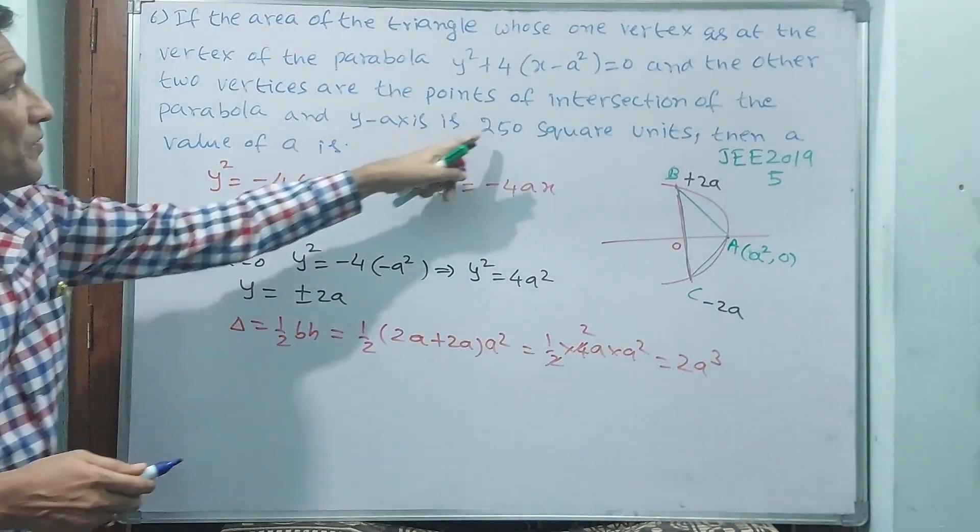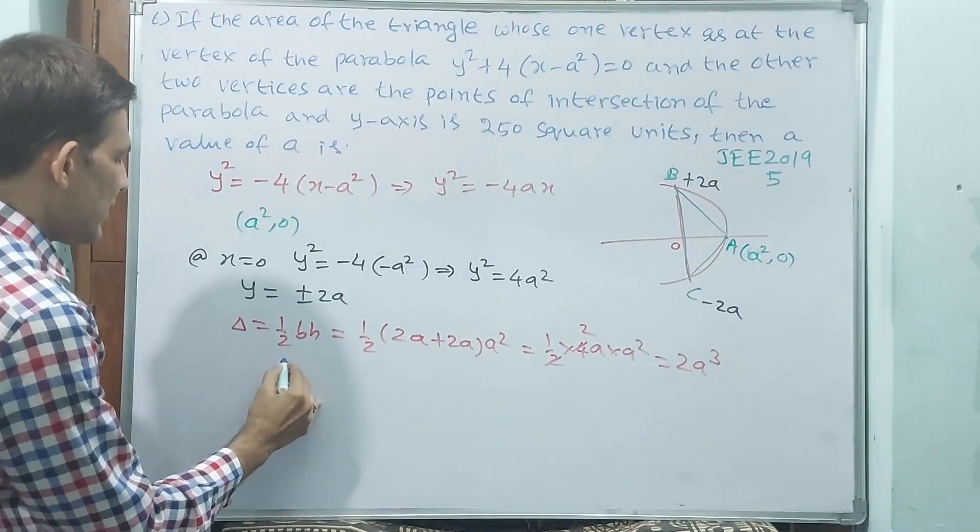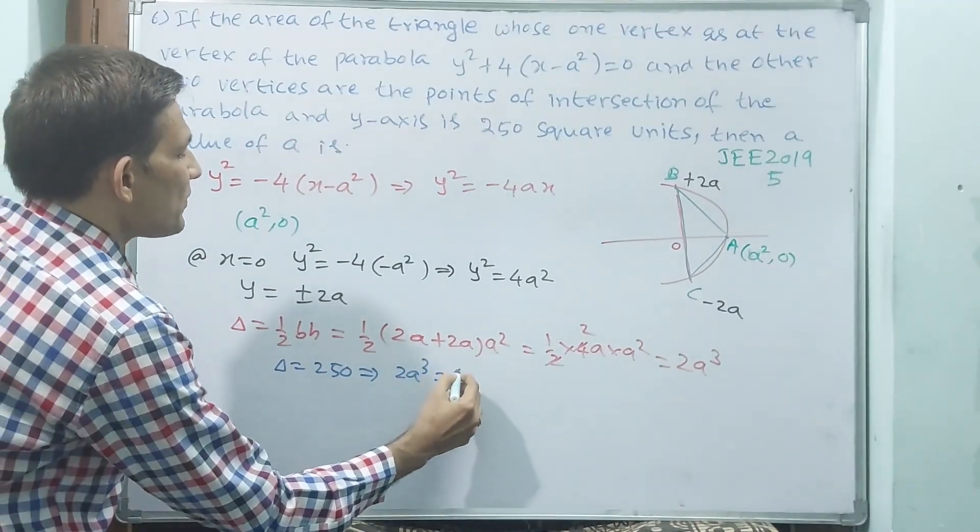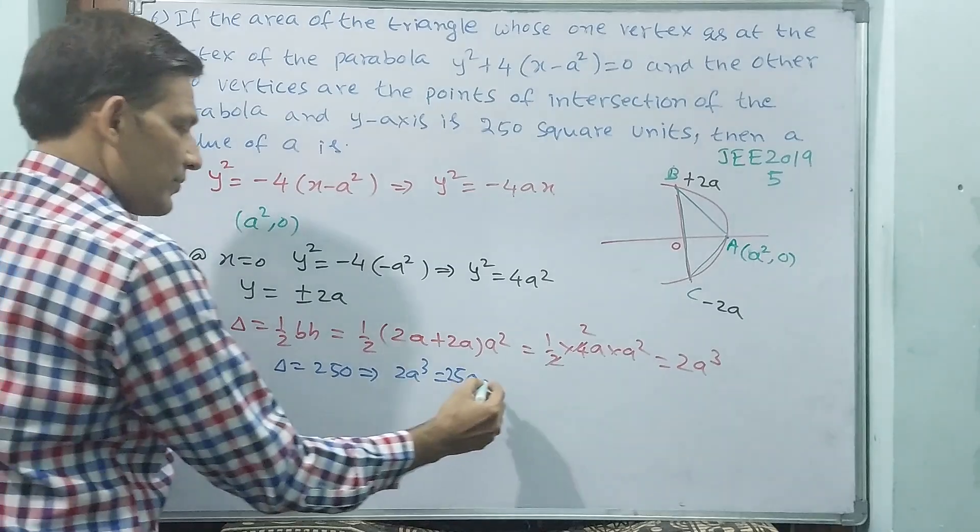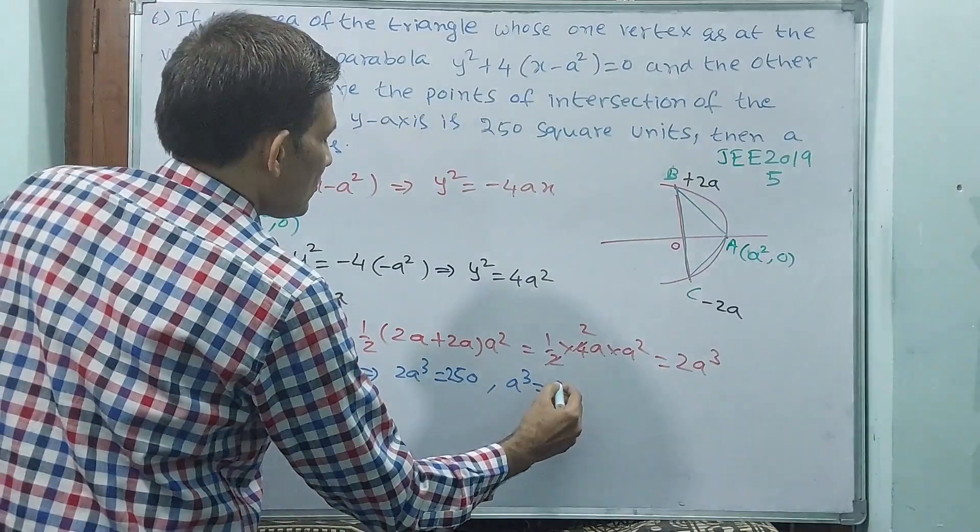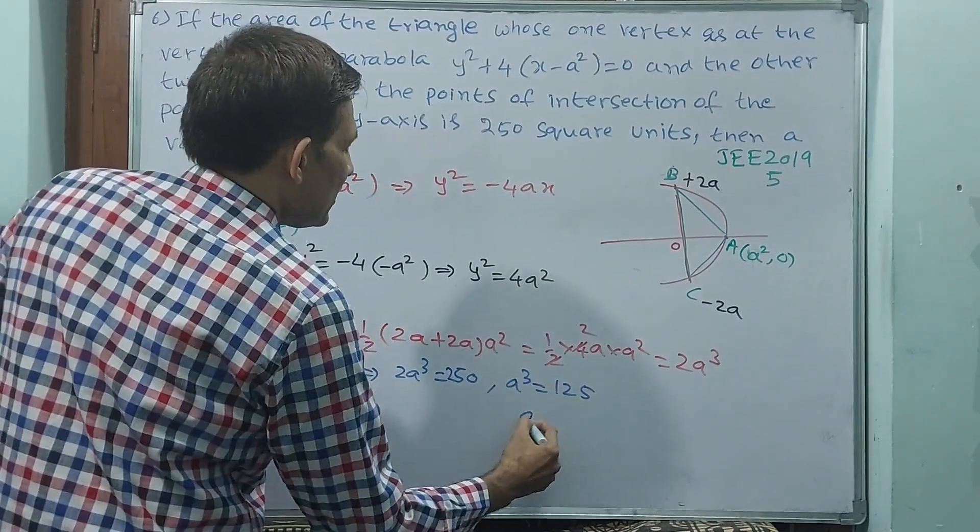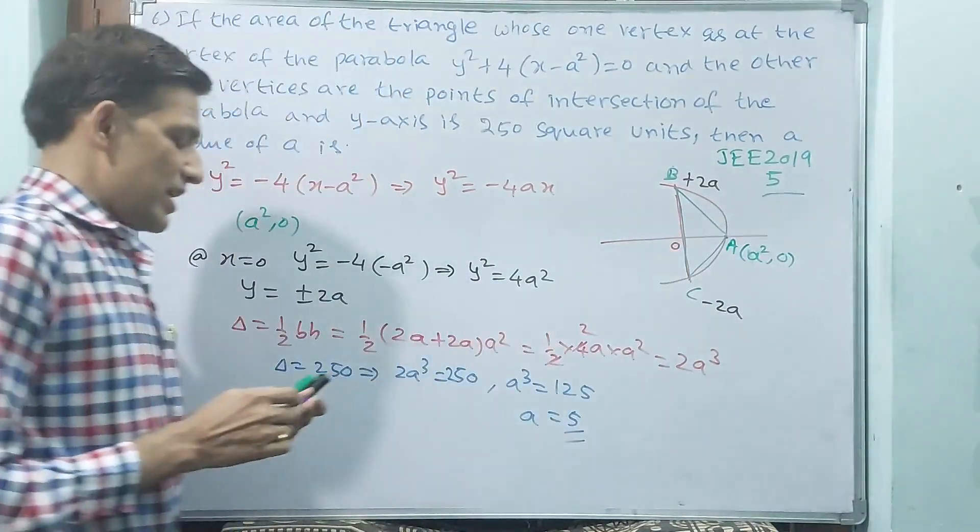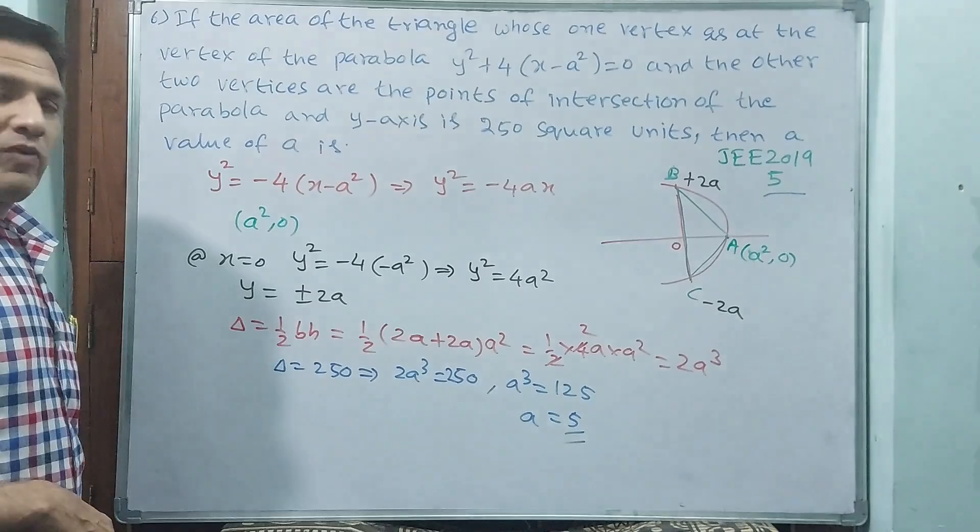But this area, they have given 250 square units here. Delta is equal to 250 implies 2 a cube is equal to 250. A cube is equal to 125. A will be 5. That's all. And a is 5 then only a cube is 125.